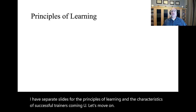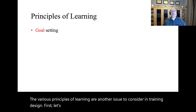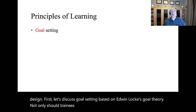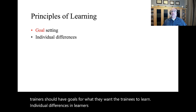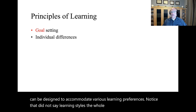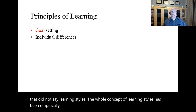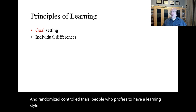The various principles of learning are another issue to consider in training design. First, let's discuss goal setting based on Edwin Locke's goal theory. Not only should trainees have goals for what they want to learn, but trainers should have goals for what they want the trainees to learn. Individual differences in learners should be recognized so that programs can be designed to accommodate various learning preferences. Notice that that did not say learning styles. The whole concept of learning styles has been empirically debunked. In randomized controlled trials, people who profess to have a learning style perform just as well in different modes of teaching as did people who did not profess a style.